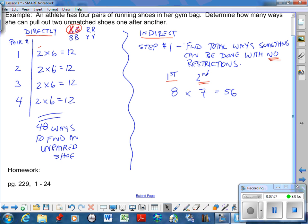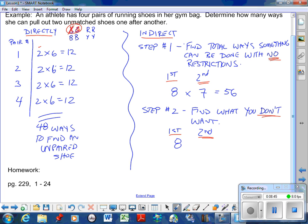Going back to the indirect method then. Step one, you find the total ways something can be done with no restriction. How many ways can you pull two shoes out of the bag? There's eight in the bag to start with, seven left after you pull one out. So there's 56. Step two: find what you don't want. If you read the question, how many ways can she pull out two unmatched pairs? Let's go the other way. The opposite of that is how many ways can you pull out a matched pair? So first, second. We have eight choices for our first draw. Once you pick that shoe, there's only one possibility for your second pick. So there are eight ways that I can pull out what I don't want.